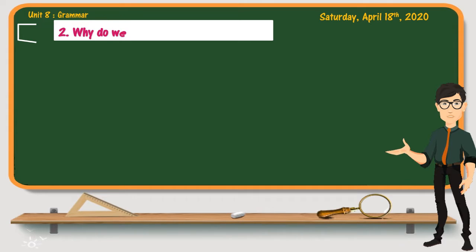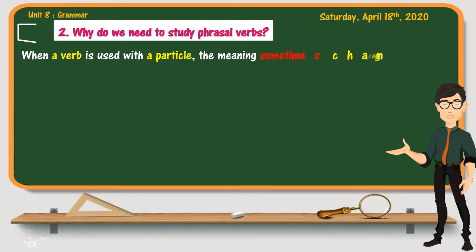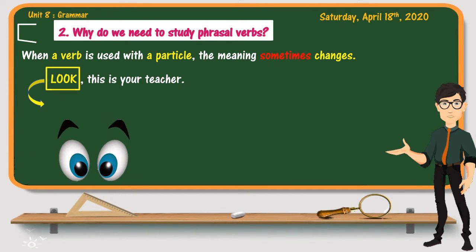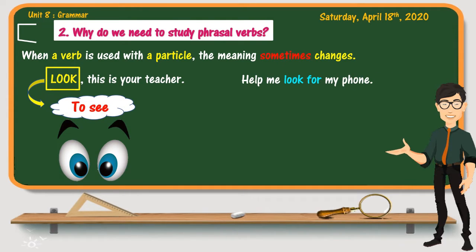Phrasal verbs are used just like other verbs to express actions and activities. But what you should know is that when a verb is used with a particle, the meaning sometimes changes. Let us study this example: 'Look, this is your teacher.' In this sentence, the verb is to look, which has the meaning of to see. However, the same verb with a particle has a totally different meaning.